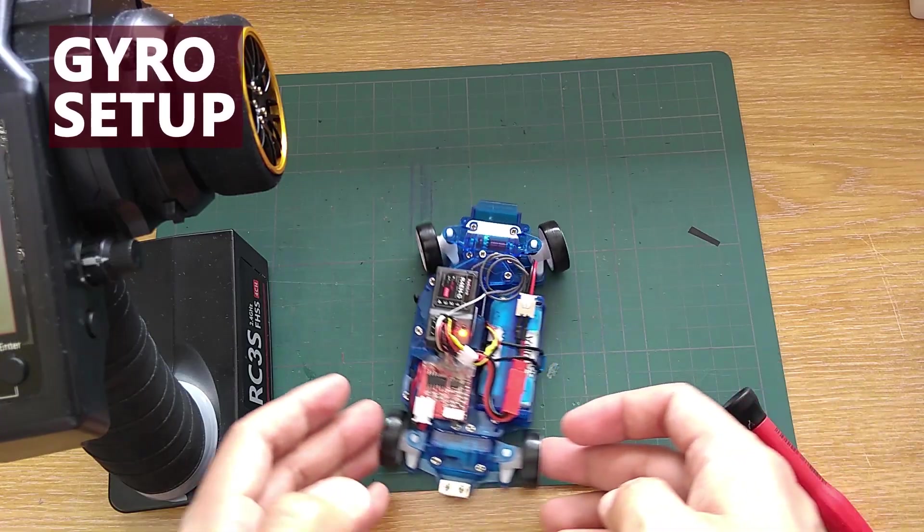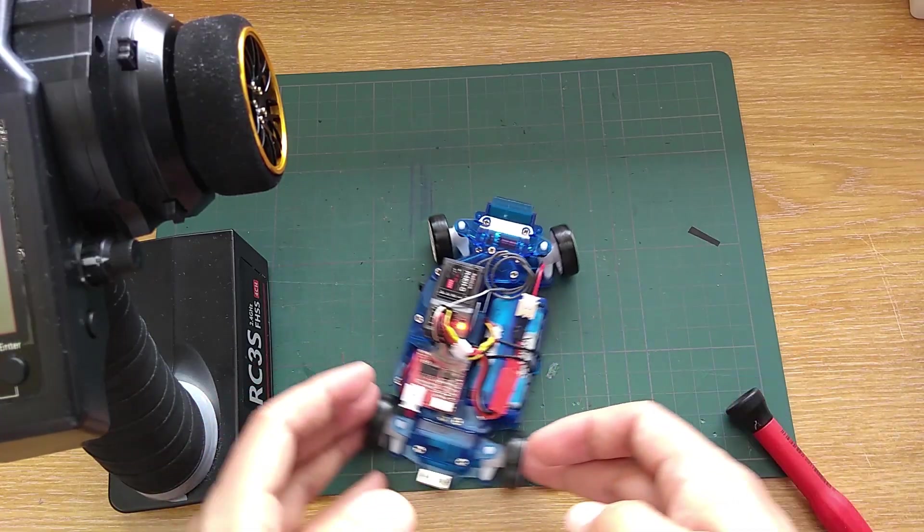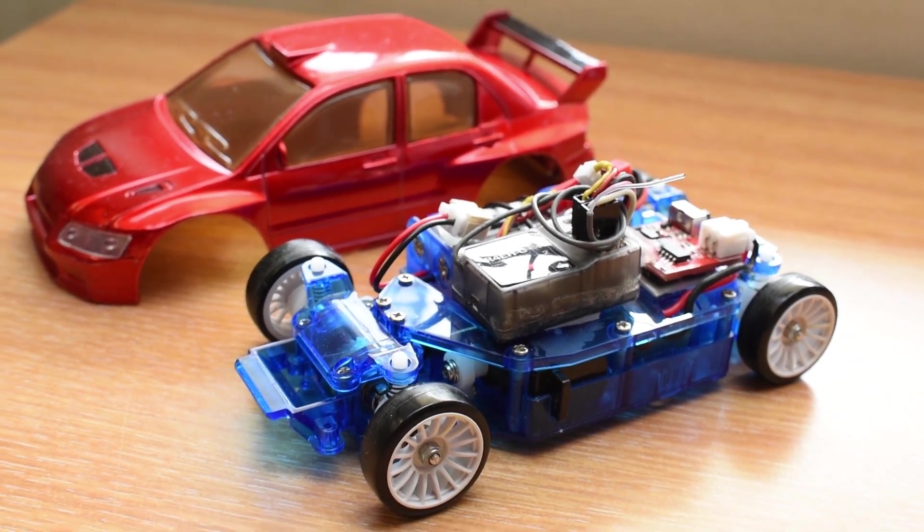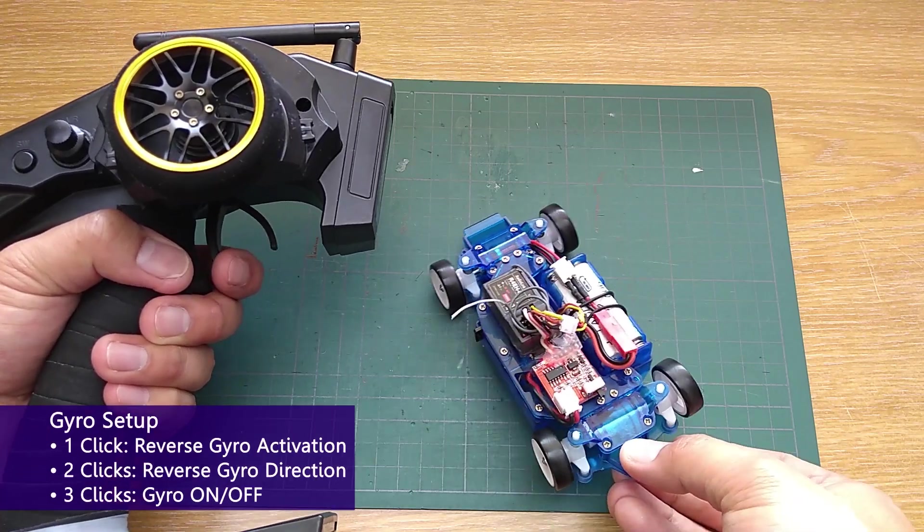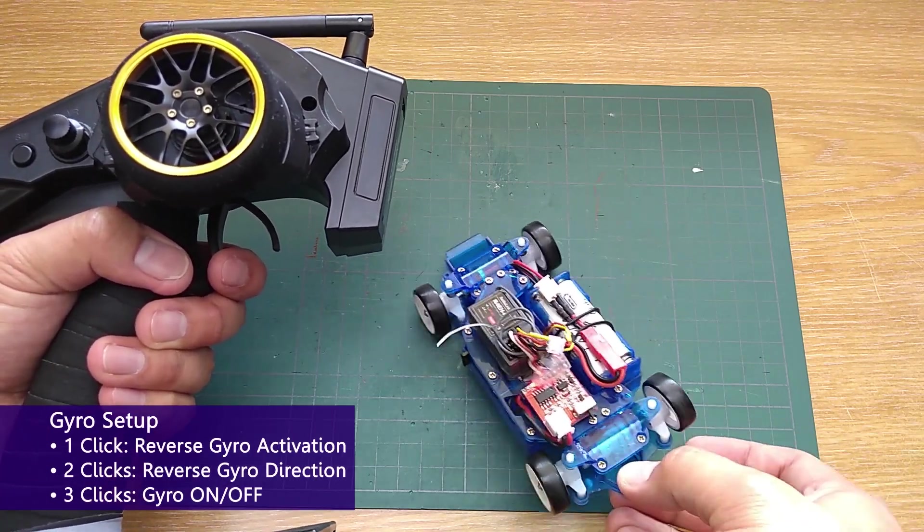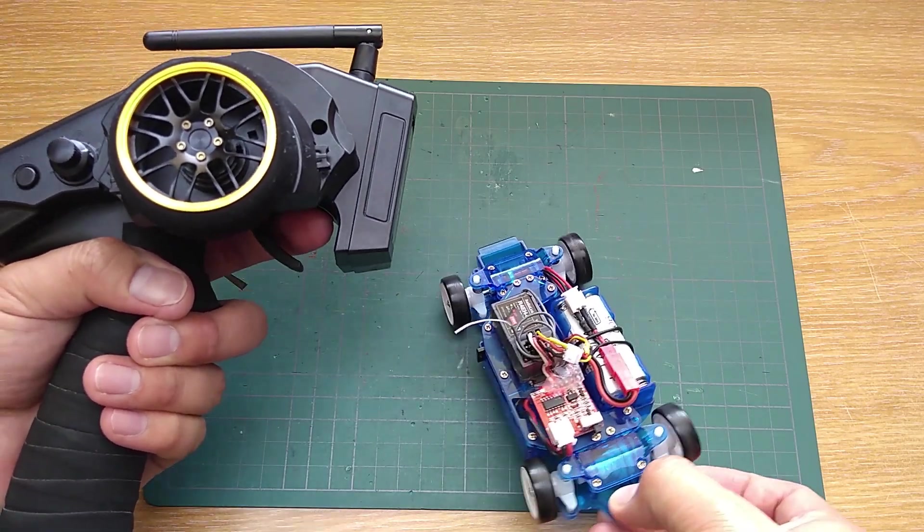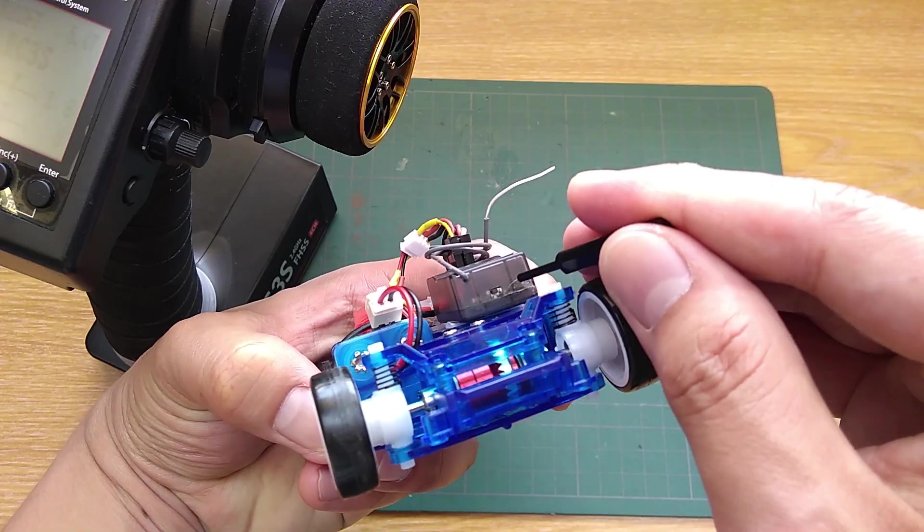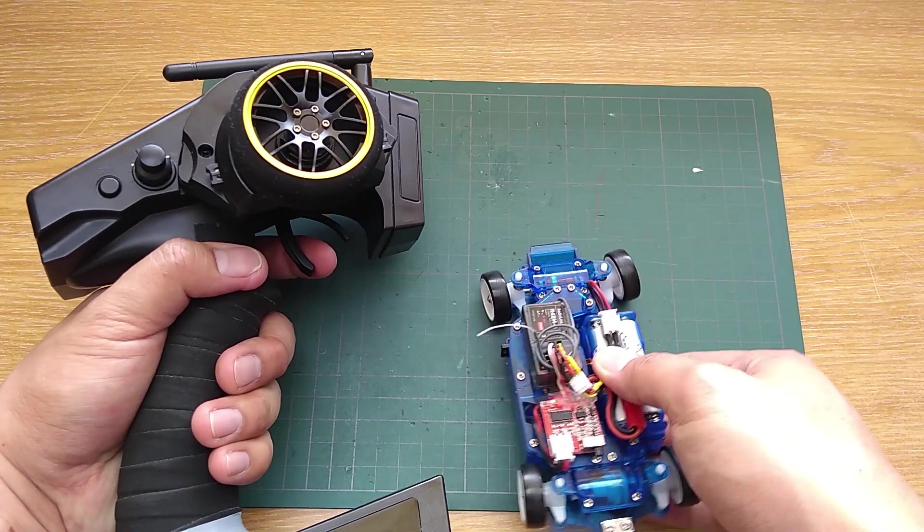Next is the gyro setup. This is the setup for Radio Link. If you use different radio system that has gyro, for example, Flysky GT5 or Spectrum with AVC, please consult your manual. First, the gyro needs to activate when going forward. As you can see here, when I pull the trigger the gyro doesn't work, but it does when I go backward. So I have to swap the gyro activation direction. It is one click on the receiver. And here it is. Next is gyro direction. It has to counter steer or turning into the direction that the car swings. What you are seeing here is not how it should work. To reverse the gyro direction, click it twice.